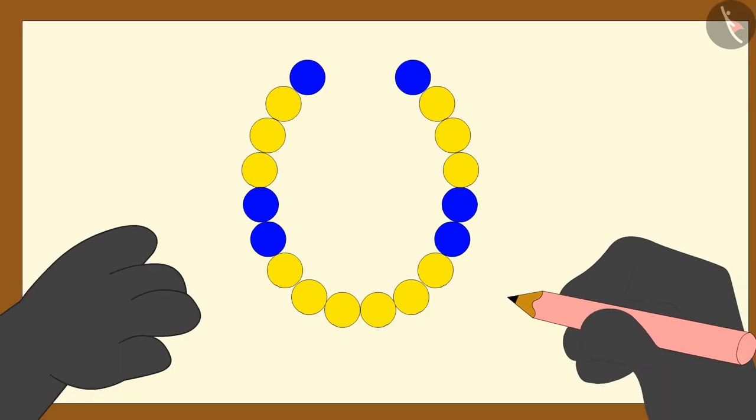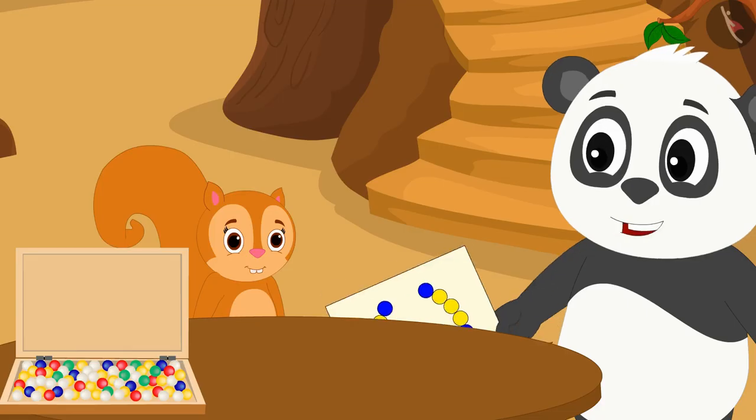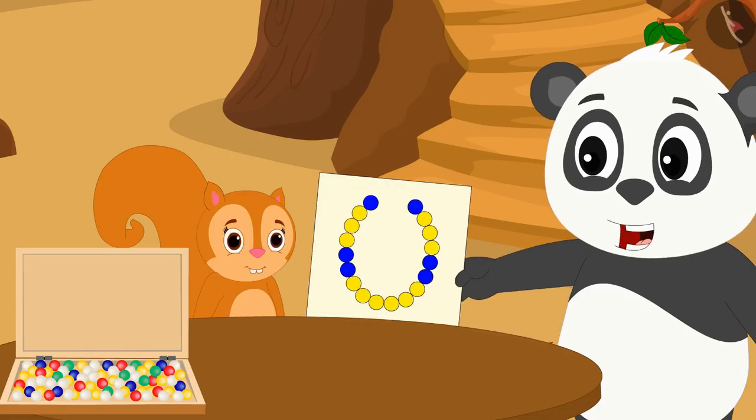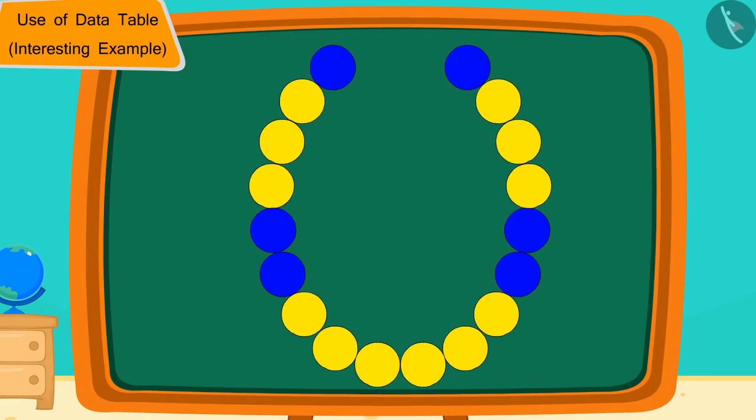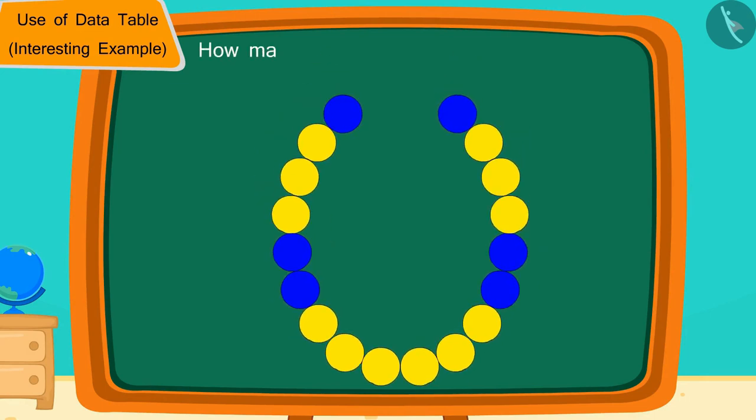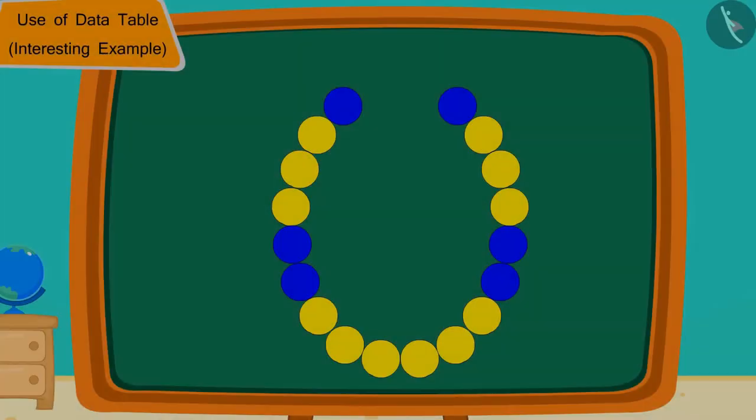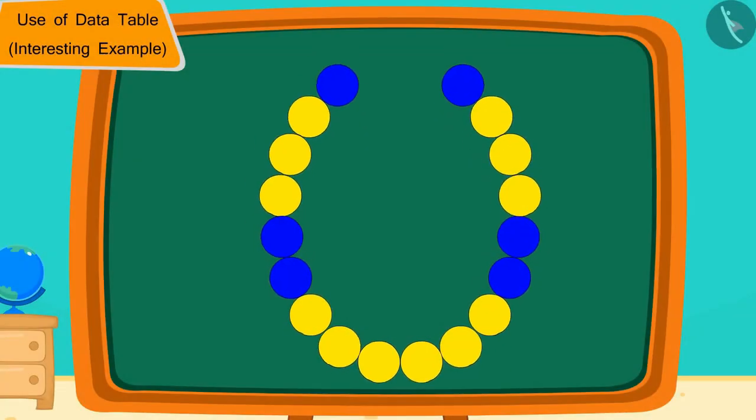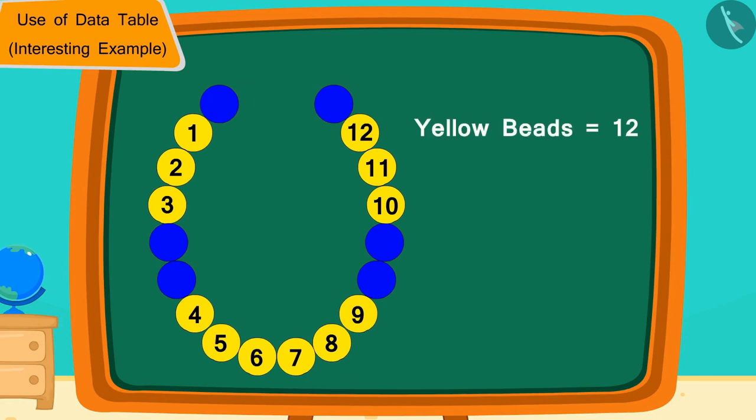And said to Chanda, let's make a necklace of this design. Children, how many yellow and blue beads do you see in Golu's design? Yes, Golu's design consists of 12 yellow and 6 blue beads.